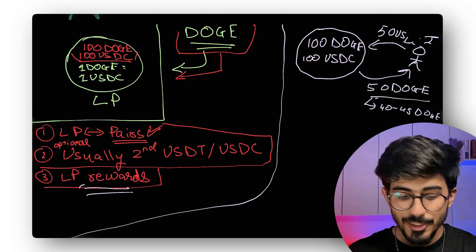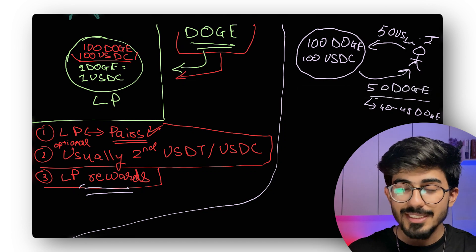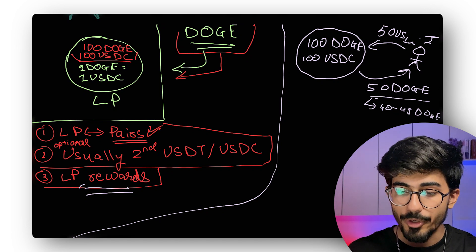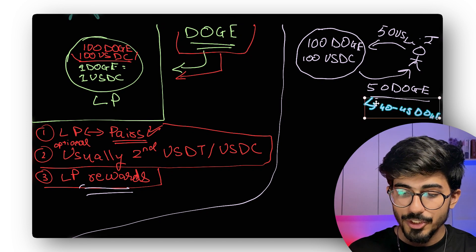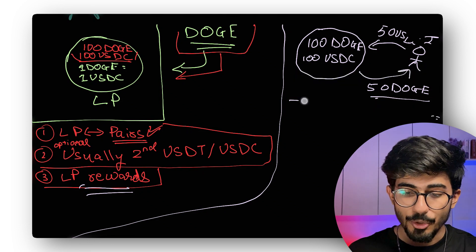So everything has been understood. You've understood liquidity pool rewards. Now let's understand the price movement. So that is what we were going to study. So let me just remove all of these things.